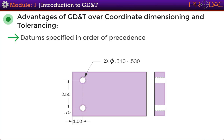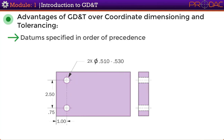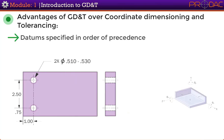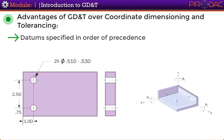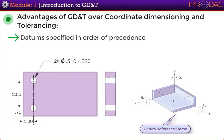In the drawing shown here, no datums are specified. The lower and left edges are implied datums because holes are dimensioned from there, but we do not know which datum is more important or whether a third datum plane is needed. A rectangular part like this is usually placed in a datum reference frame for inspection, which consists of three mutually perpendicular planes. When datums are not specified, machinists and inspectors are forced to make assumptions that could be very costly.